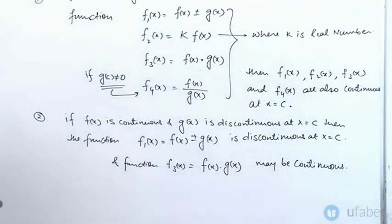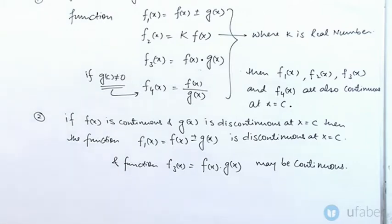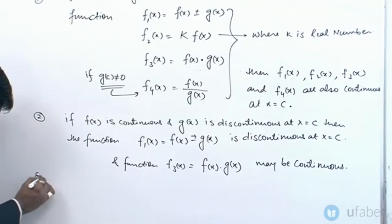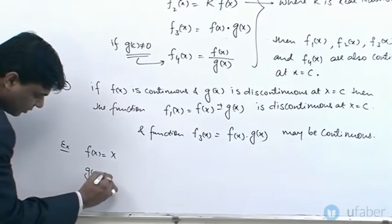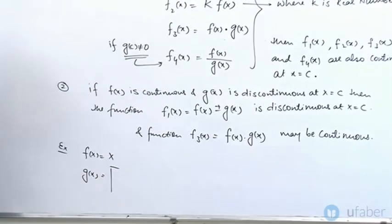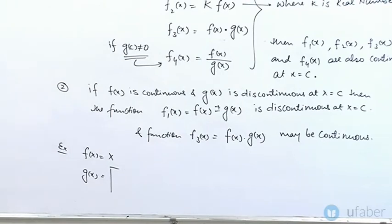So f(x)·g(x) may be continuous, but f(x)+g(x) or f(x)−g(x) — the sum or difference function — is definitely discontinuous at x equal to c. Example: let f(x) equal x, and g(x) equal sin(π/2x) and 0.